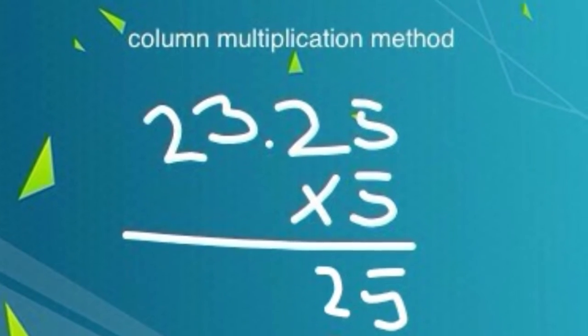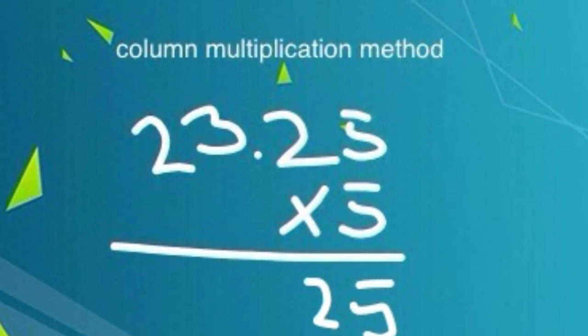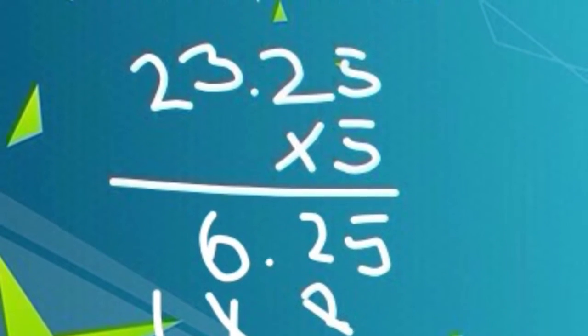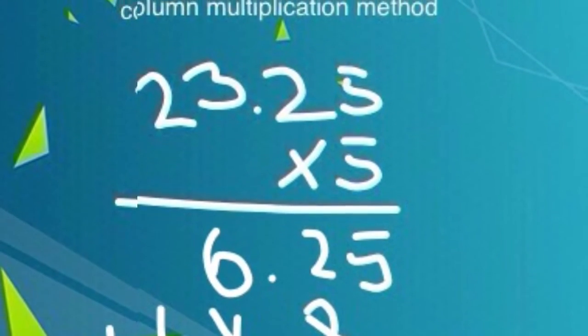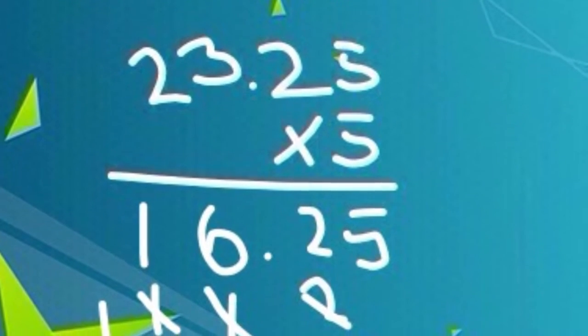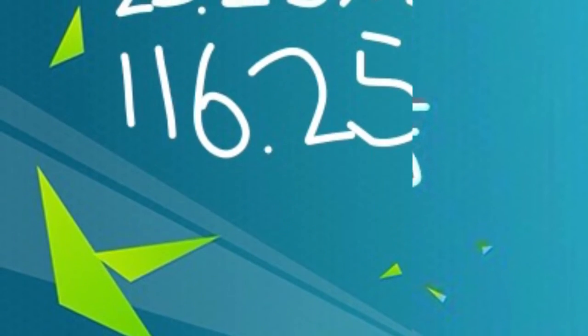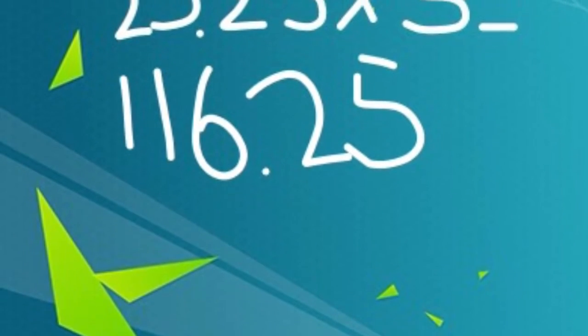Add 2 from 0.25 equals 1.2. 3 times 5 equals 15. Add 1 from 1.2. 5 times 20 equals 100. Add 1 from 16. Add the 100 on as there is nothing else to times. The answer is 116.25.